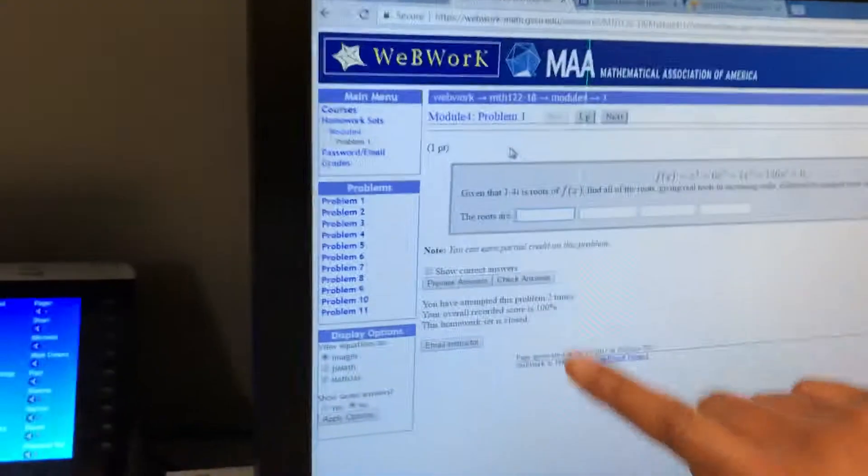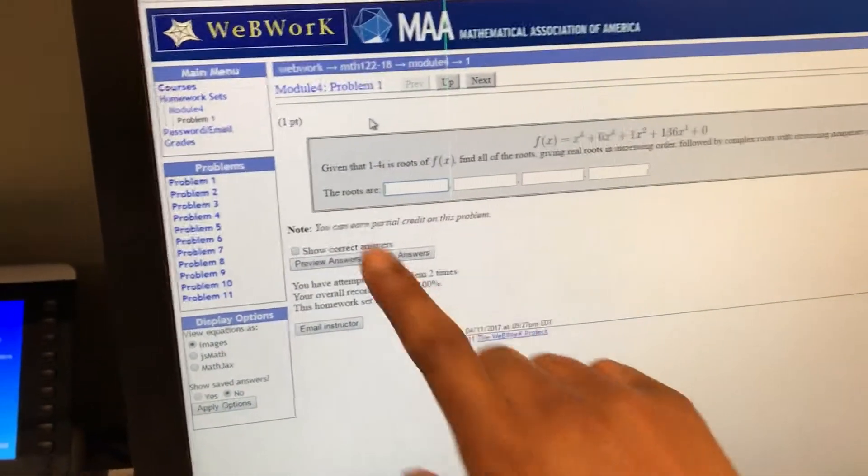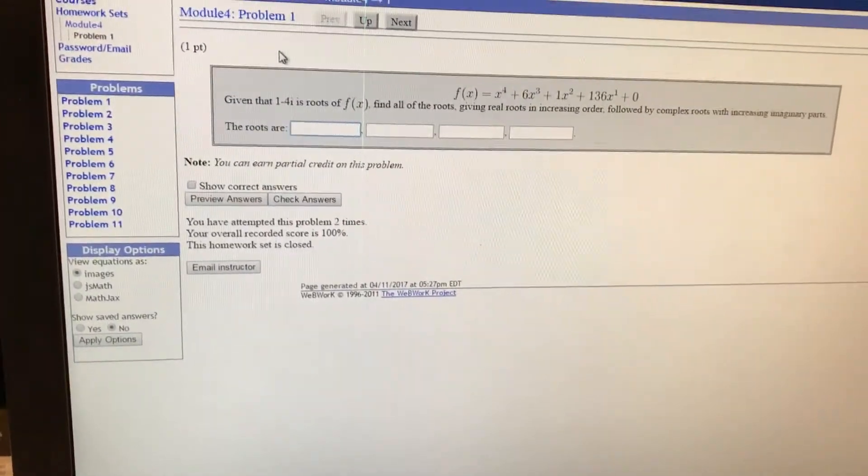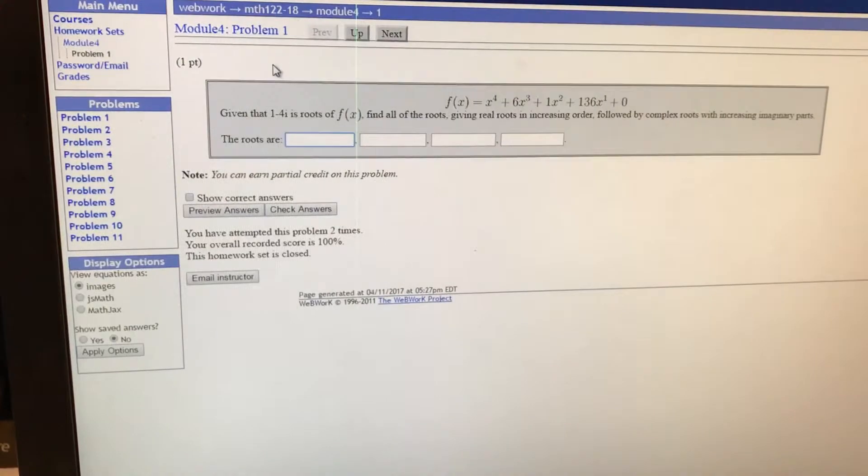Okay, so we're actually going to do problem 1 in module 4. In the equation, we're going to find all the given roots for this equation, but they already gave us 1 minus 4i, so it's already guaranteed that we're going to have 1 plus 4i.